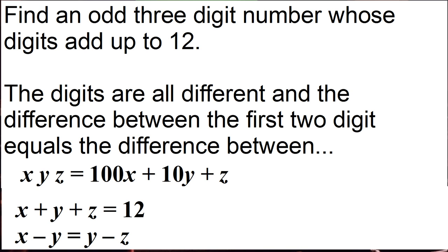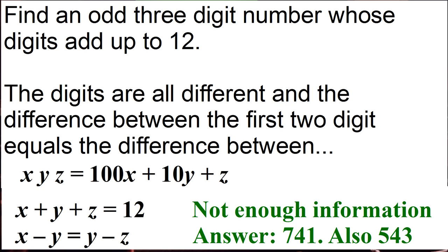So in the movie they give an answer of seven hundred and forty-one, but actually there's not enough information to solve this question, because although seven hundred and forty-one does satisfy these constraints, you also have five hundred and forty-three, which is another odd digit number whose digits add up to twelve and the difference between the first two is the same as the difference between the second two.